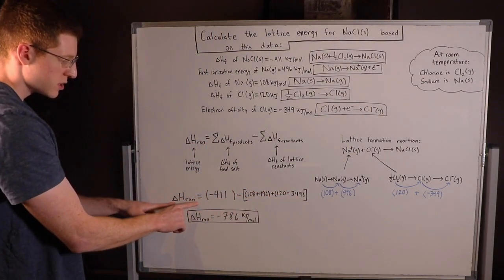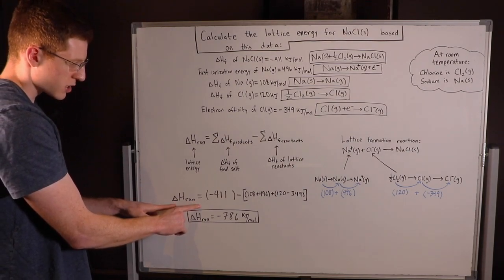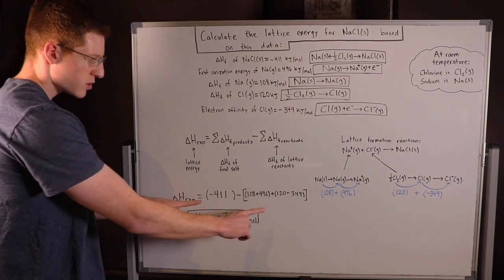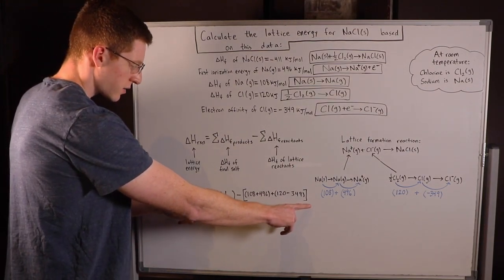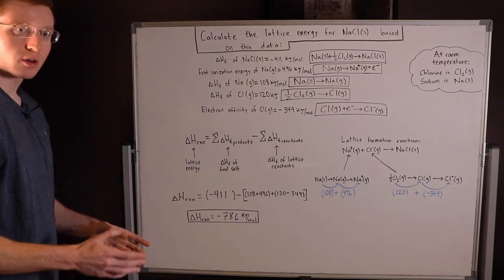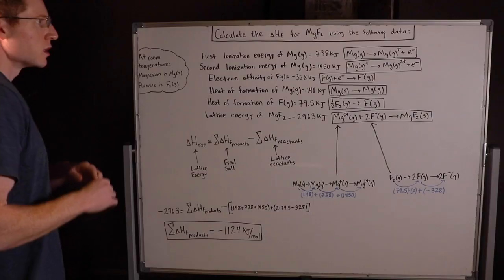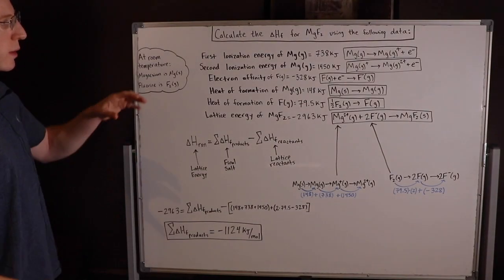Now all that's left to do is solve for the overall lattice energy. If you type all this into your calculator, you should get negative 786 kilojoules per mole. Let's do another example.